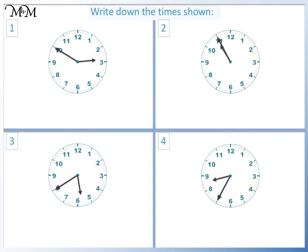Here are some questions for you to try. Write down the time shown. Pause the video now and have a go. Question 1: The minute hand is pointing to 10. Counting back in fives from 12, this is 10 minutes to — so 10 to. The hour hand is moving towards 3, so the time is 10 to 3.